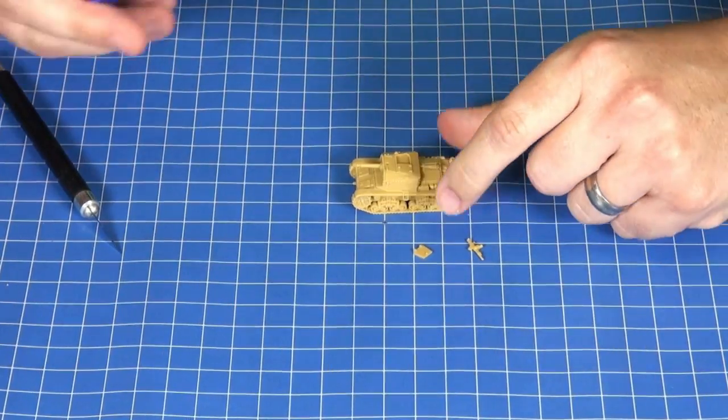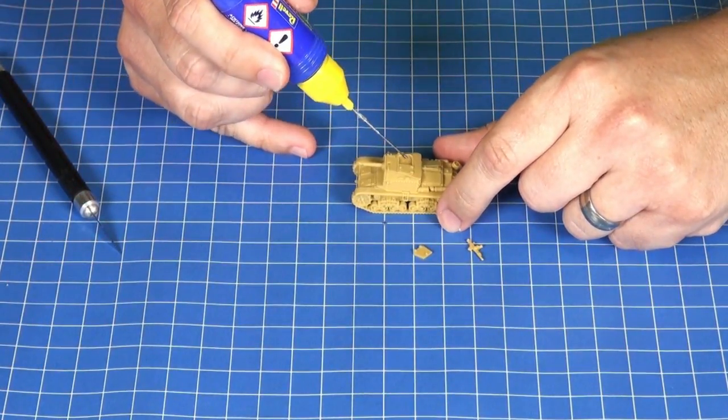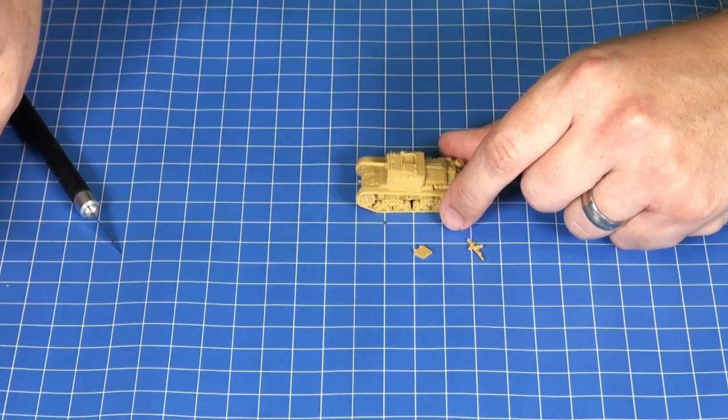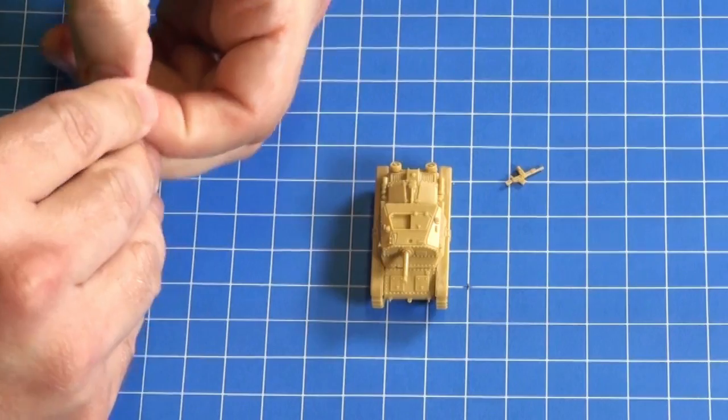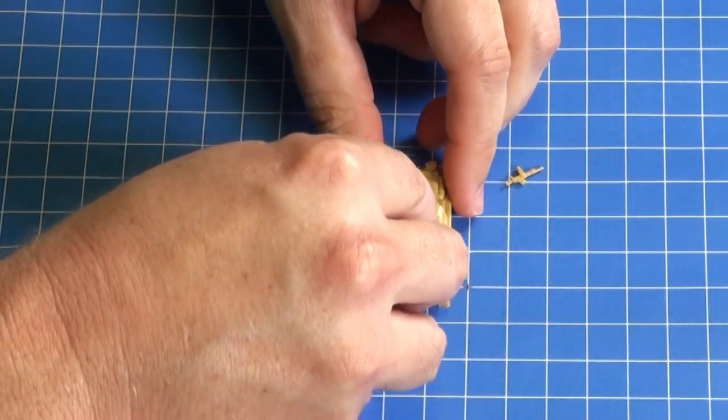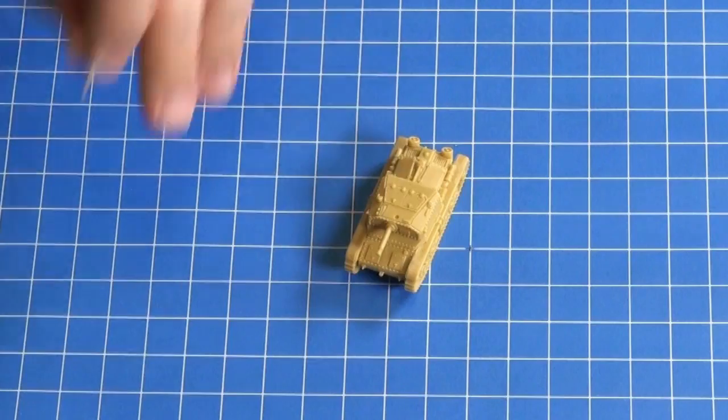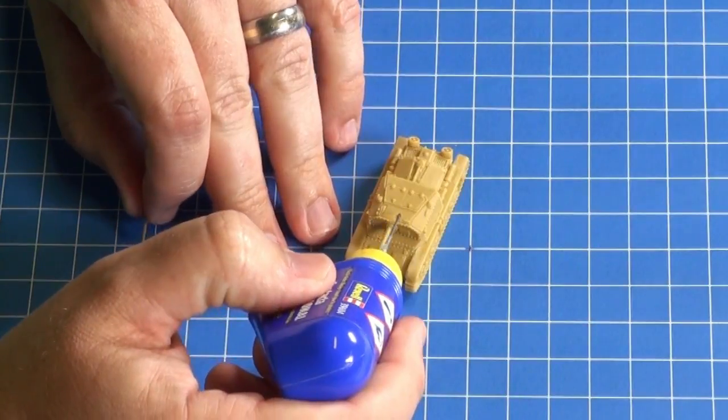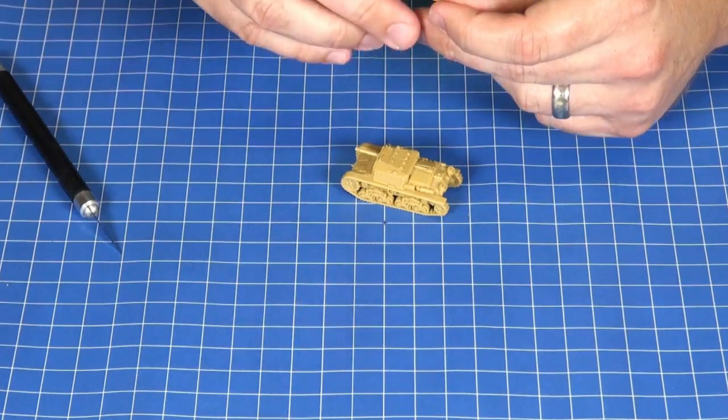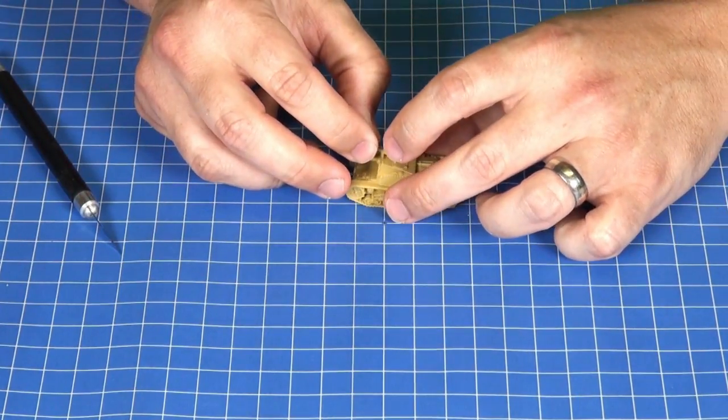Then you can attach the hatch, you can either glue that in open or closed. Today I'll just be gluing it in closed. And now to finish off the model, we'll add the machine gun. There's a small hole on the top of the casemate there, just put a drop of glue in, and attach the machine gun.